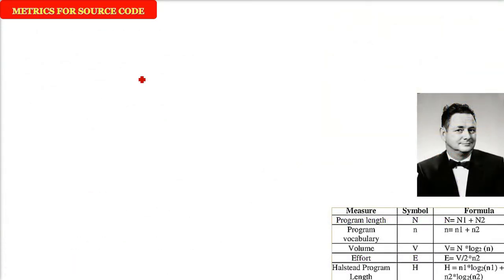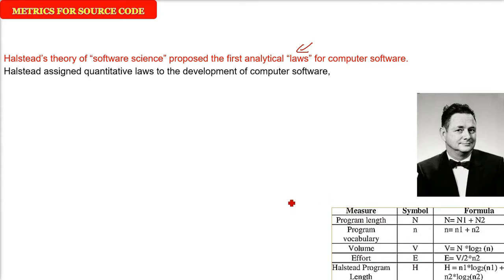Metrics for source code. Now the programmer and software team are more interested in the software code. Halstead gave a theory of software science and was the first to propose analytical laws for computer software.